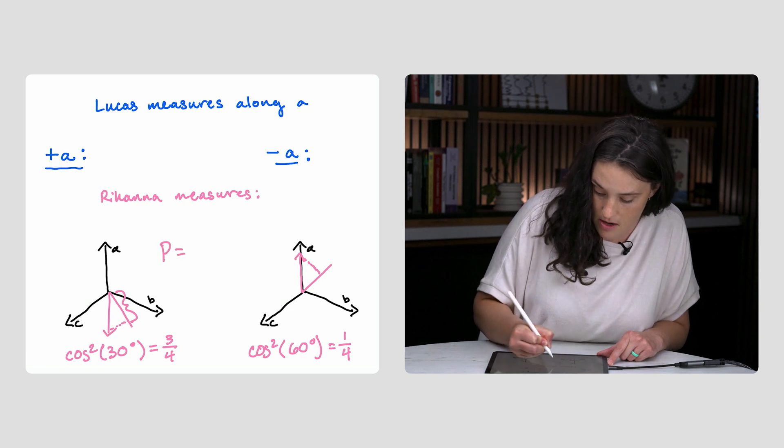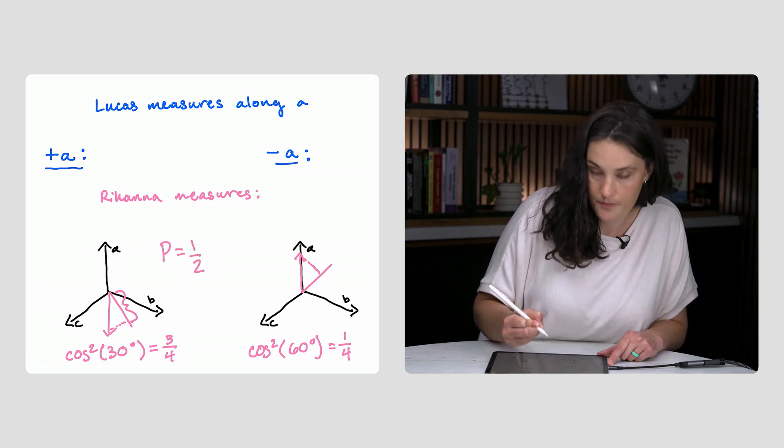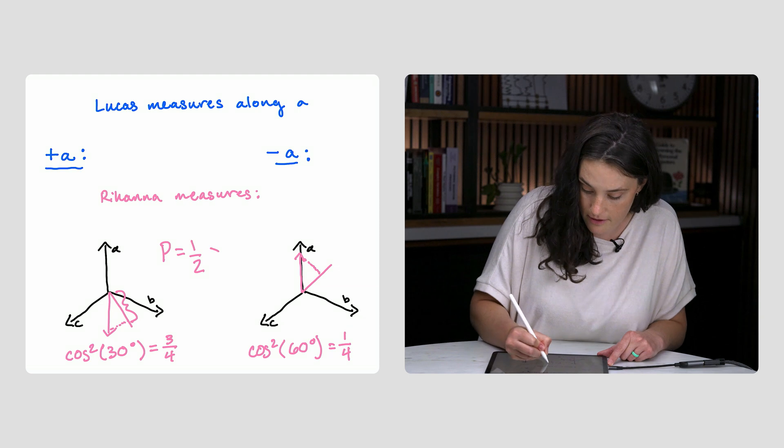So P equals 1 half. 1 half is bigger than 4 ninths.